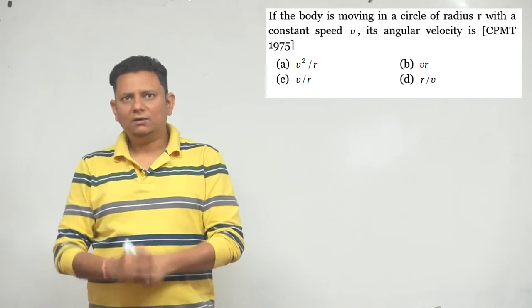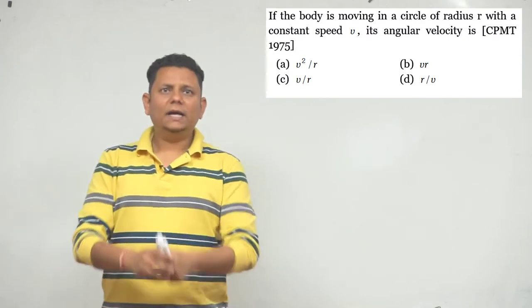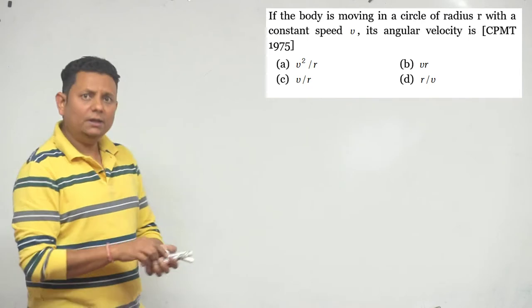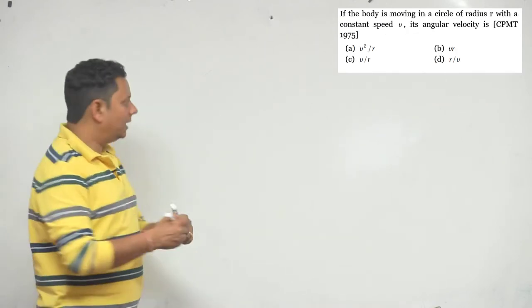Next question: if a body is moving in a circle of radius r with a constant speed v, the angular velocity will be... You are given 4 options. So if the particle is moving at constant speed,